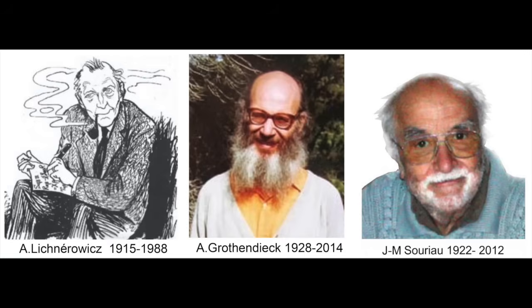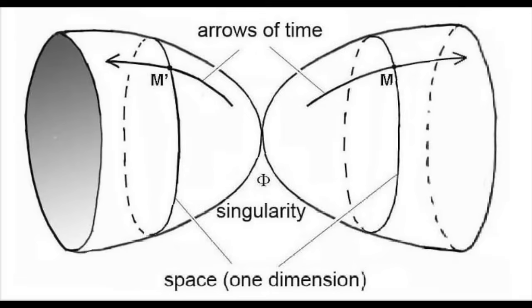In my career, I had the chance to work with three famous mathematicians: the first is Vishnevski, the second Alexander Grothendieck, and the third the French Souriau. Grothendieck suggested that these two twin universes could interact and be in two conjunctions — meaning that associated portions of space-time in each of the two universes would interact with opposite arrows of time.